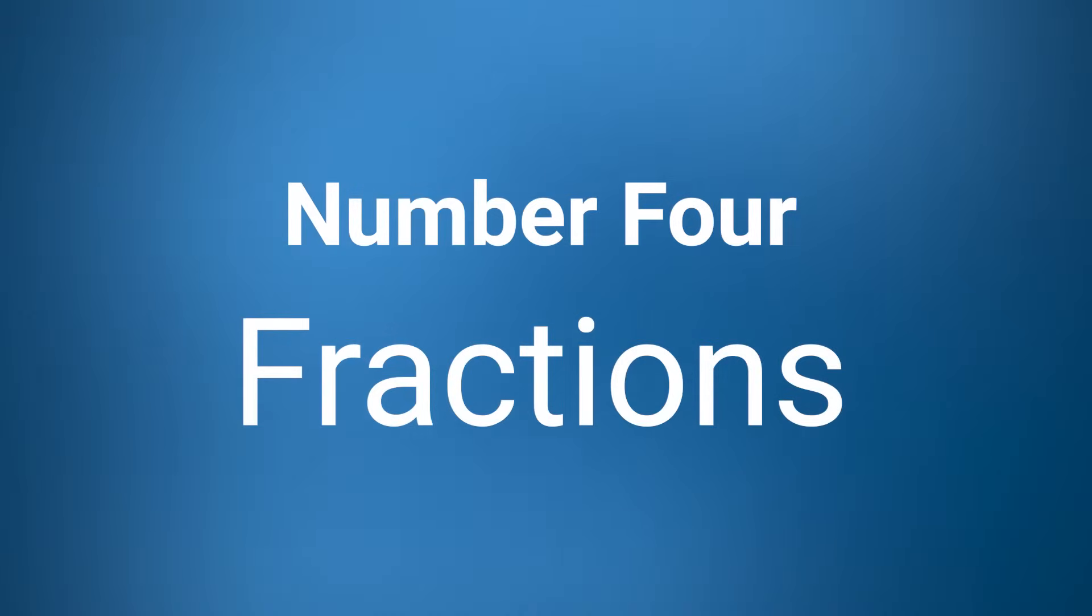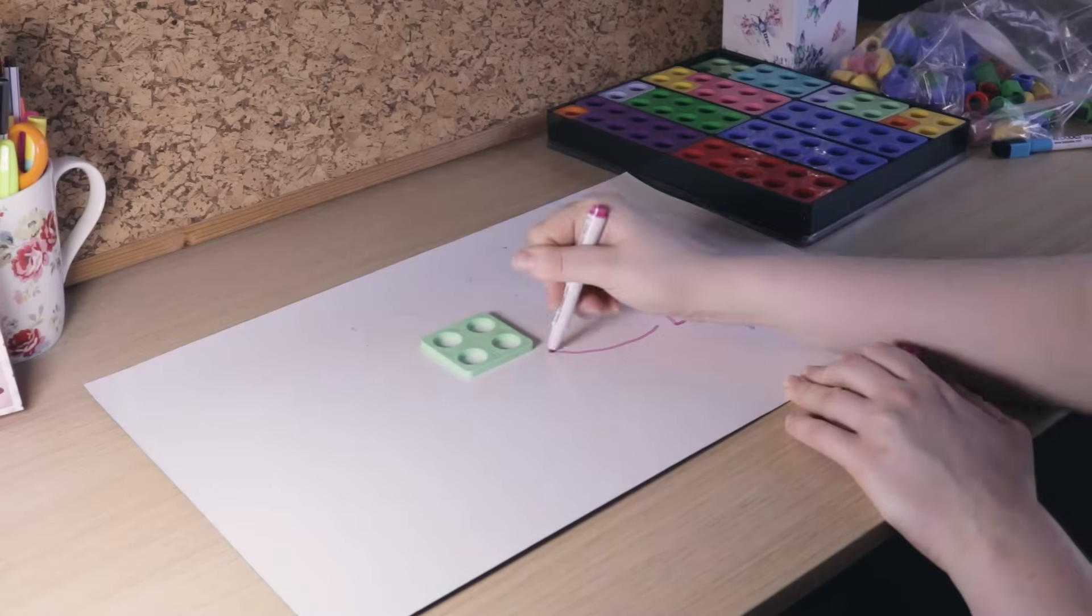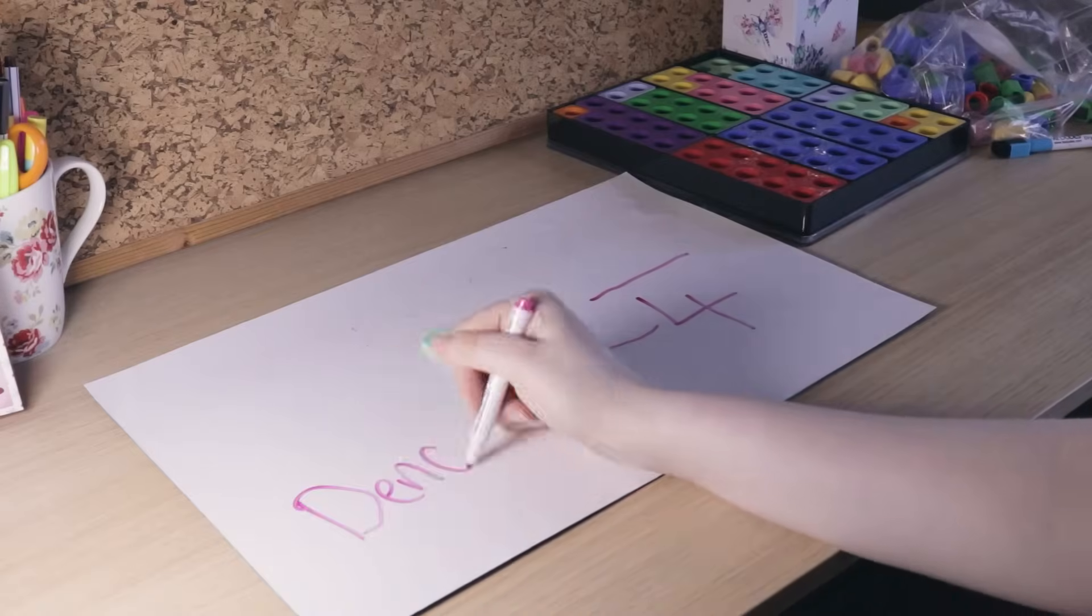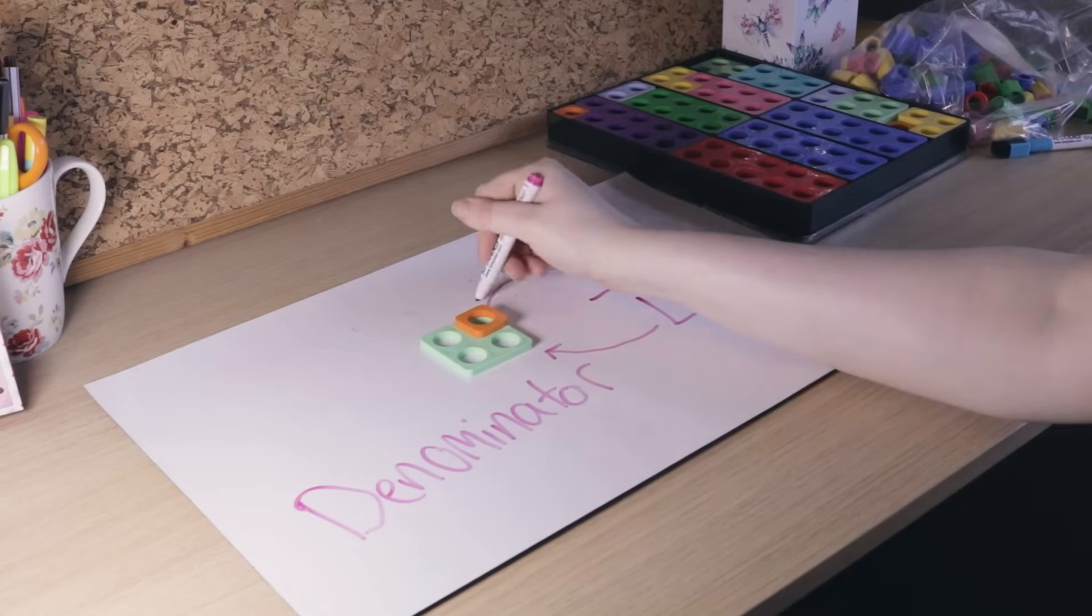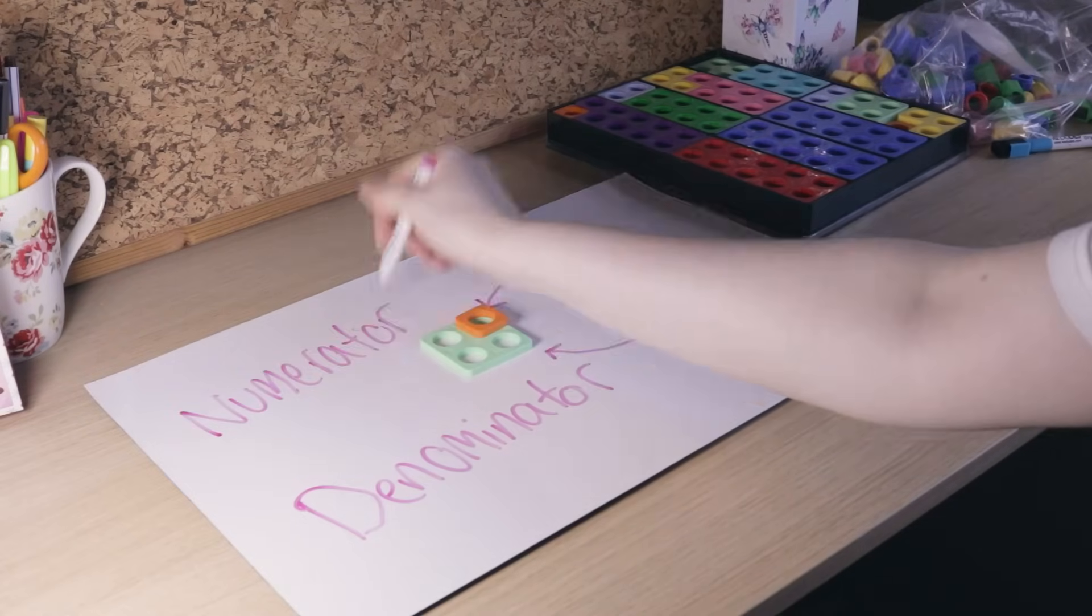We can also use Numicon to teach fractions. Using physical objects when teaching fractions is useful as it helps children to visualize a whole and a part of the fraction. For these exercises it's important for children to understand that the shape on top is the smaller number, the numerator, and the shape on the bottom goes on the bottom of the fraction, the denominator.